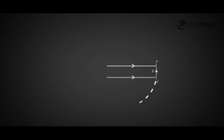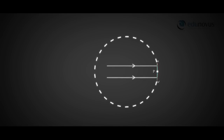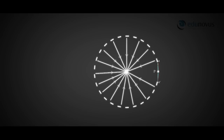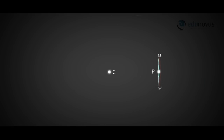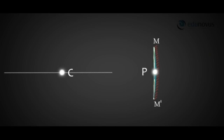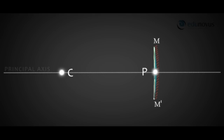The concave mirror is a part of a spherical shell. The centre of the spherical shell is called the centre of curvature, denoted by C. When you join the centre of curvature C and the pole P, the straight line is called the principal axis.